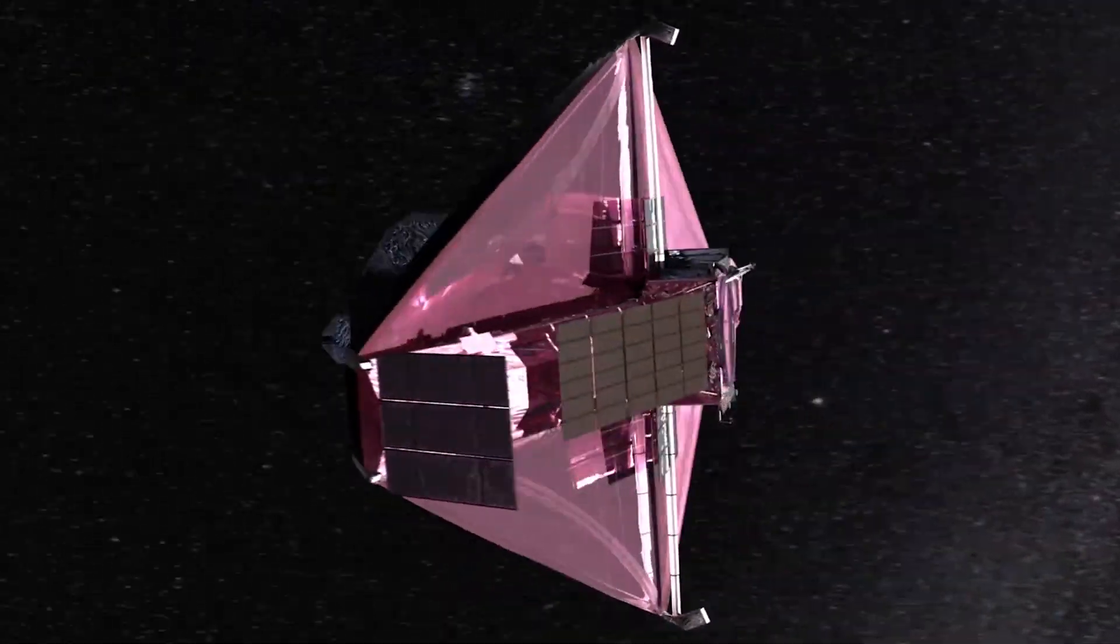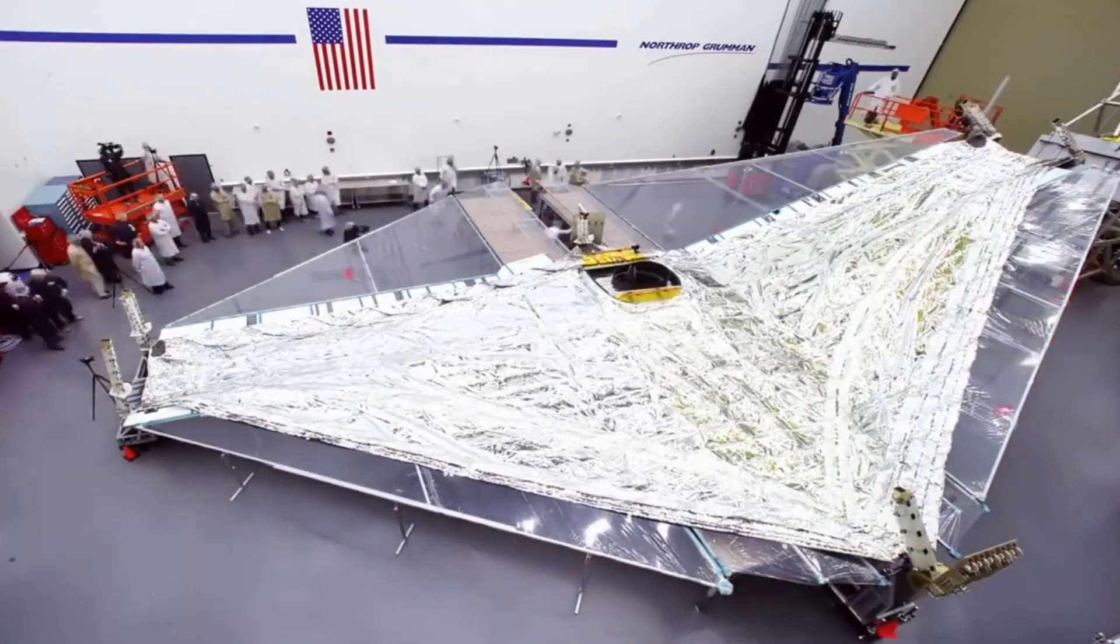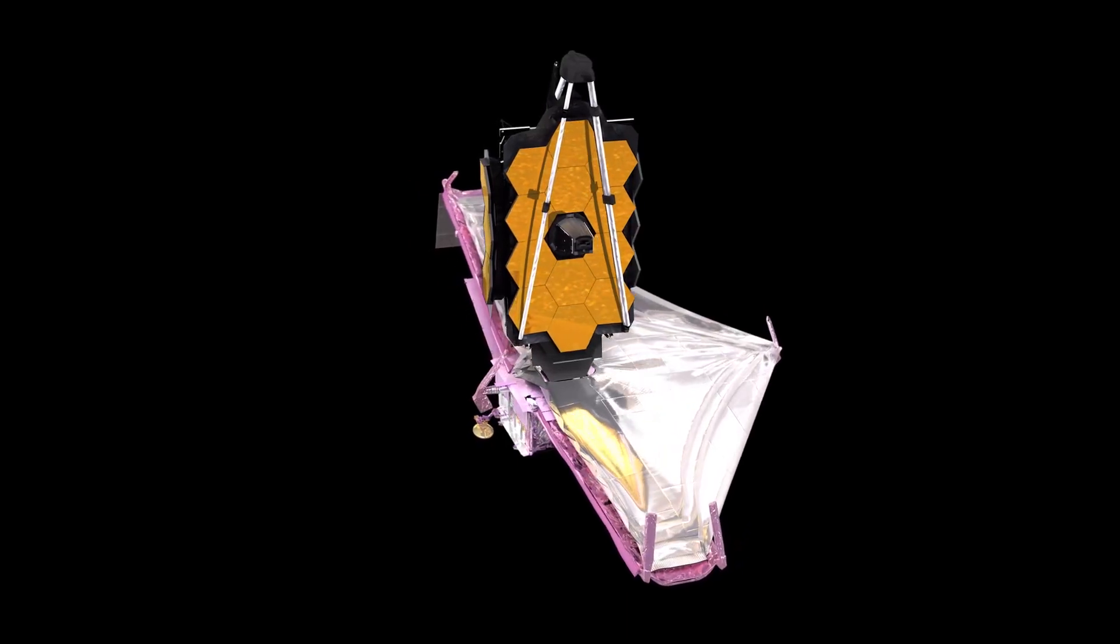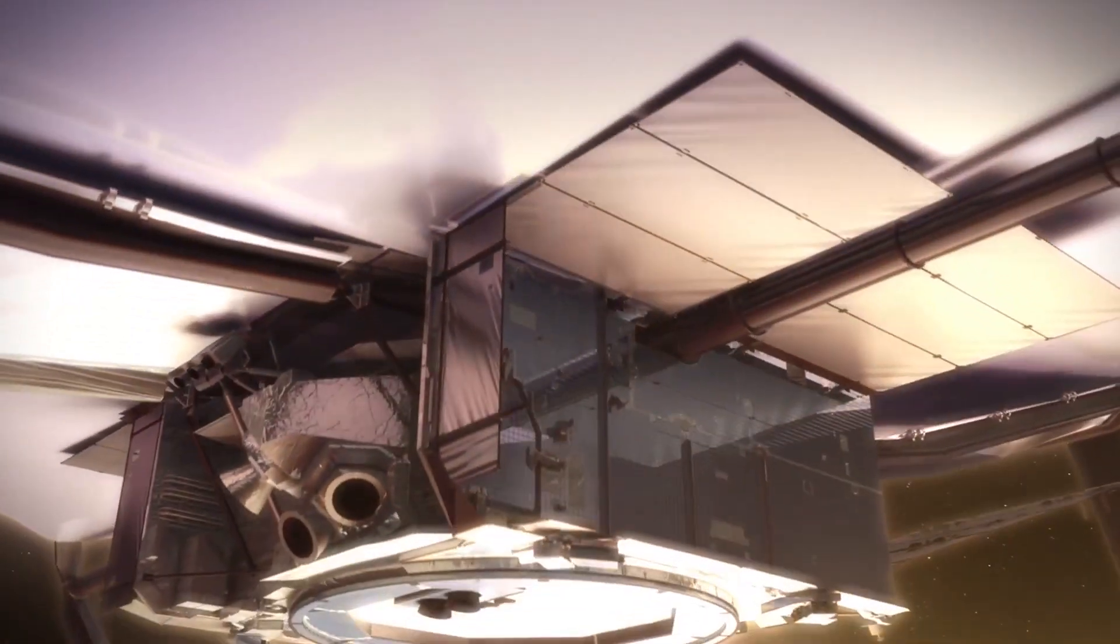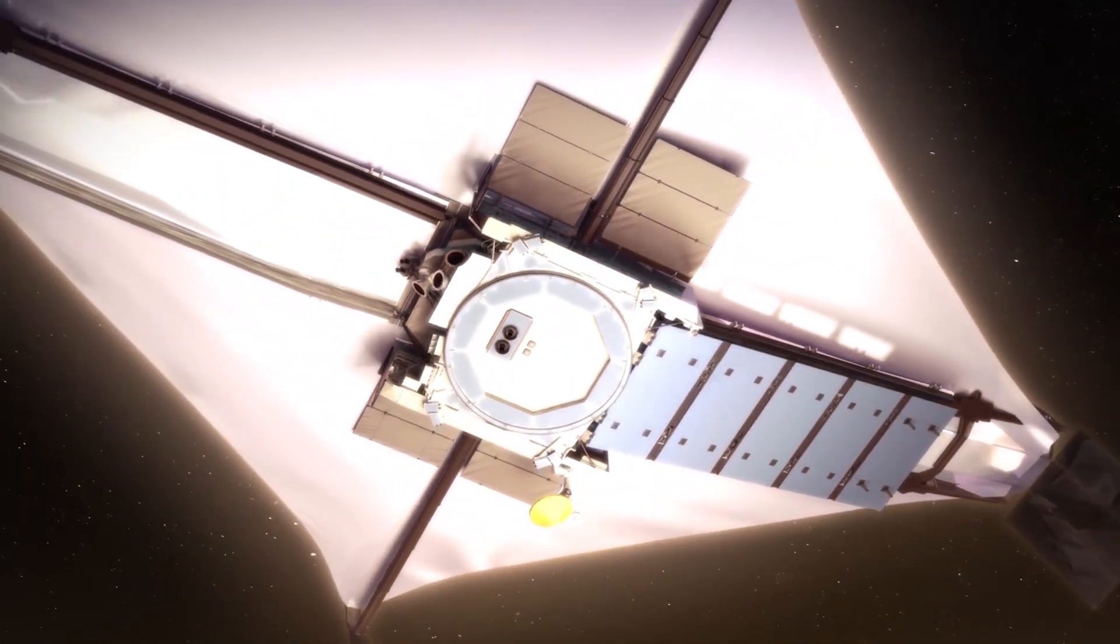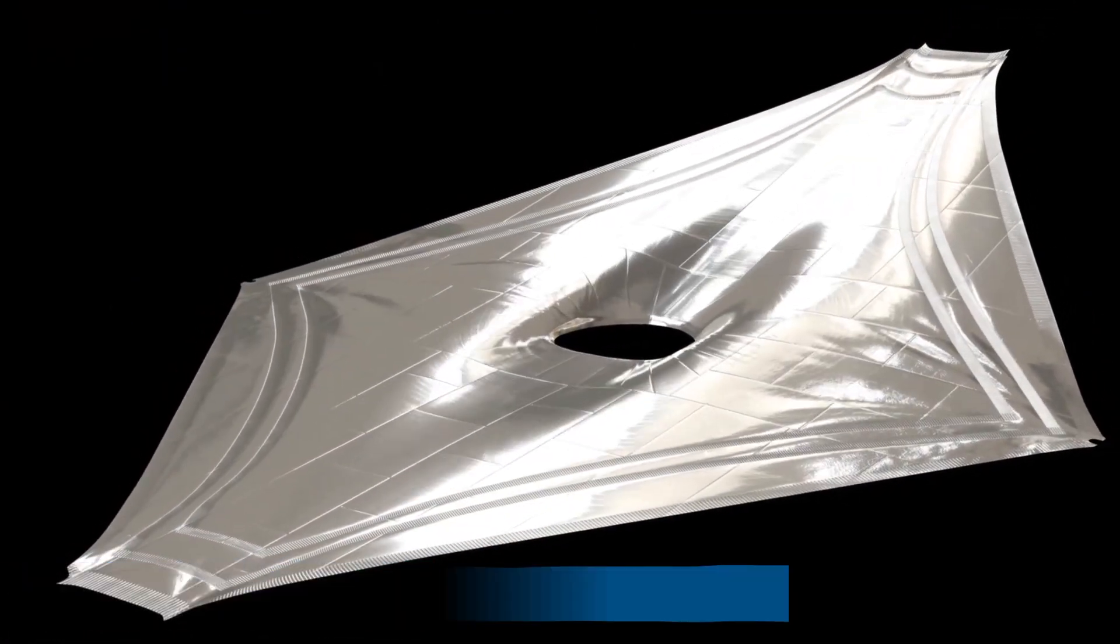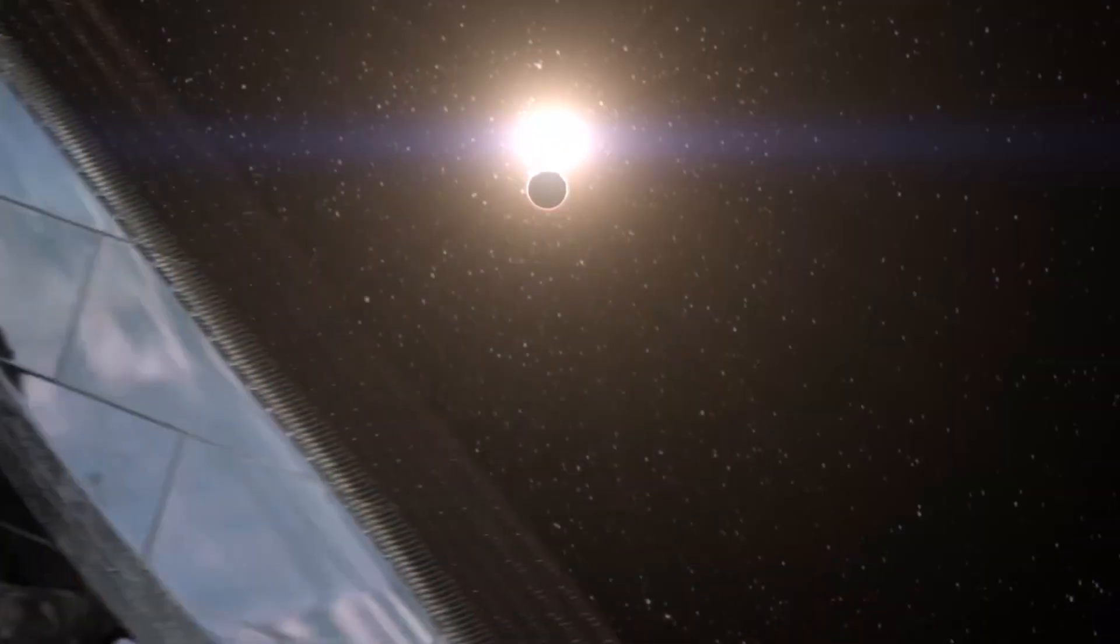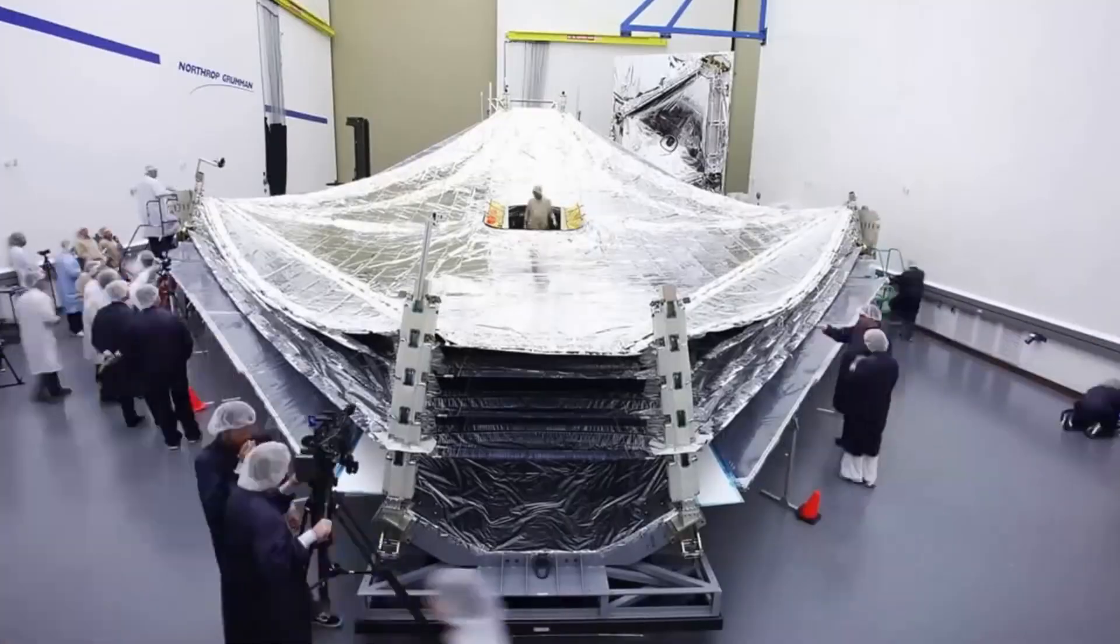The Webb Telescope requires cooling to operate properly. It accomplishes that with the help of a tennis court-sized 5-layer sunshield. Less than two weeks after Webb's Christmas Day launch, the incredibly thin layers of the shield were successfully deployed, despite the fact that this mechanism was folded up. The sun's intense heat would damage the telescope's sensors if there were no protection. About 260 degrees Fahrenheit will be experienced on the side facing the sun, while about 370 degrees below zero will be experienced on the opposite side, a contrast of almost 600 degrees. Webb receives a sun protection factor, or SPF, of 1 million, thanks to the sunshield.